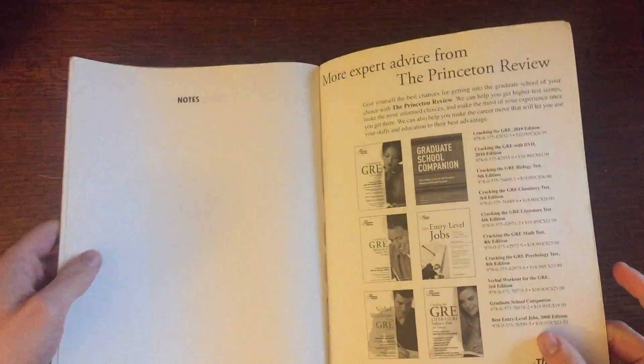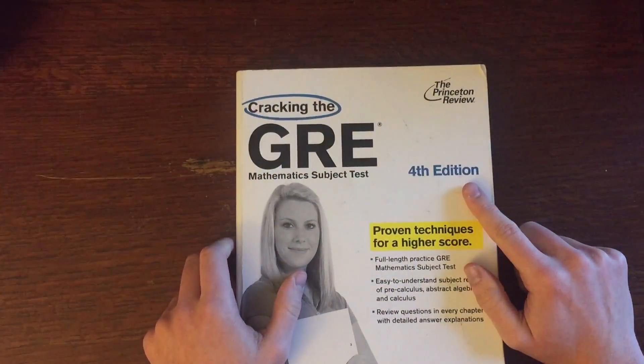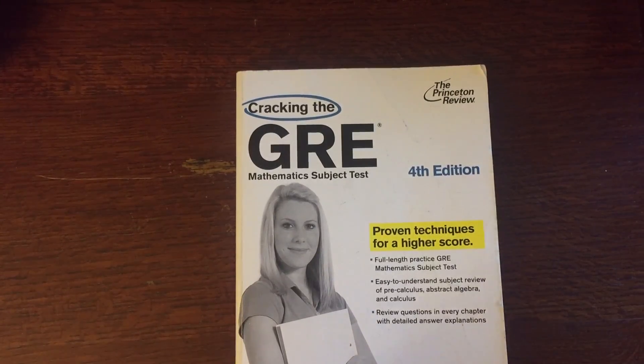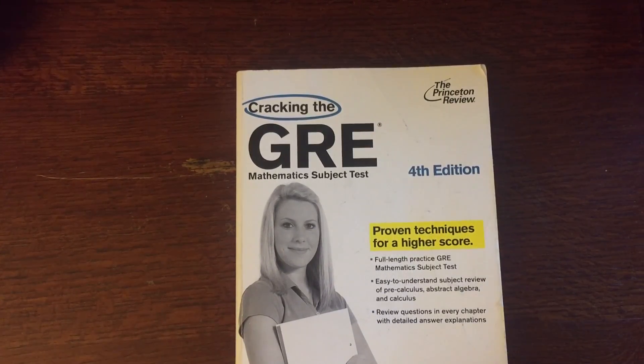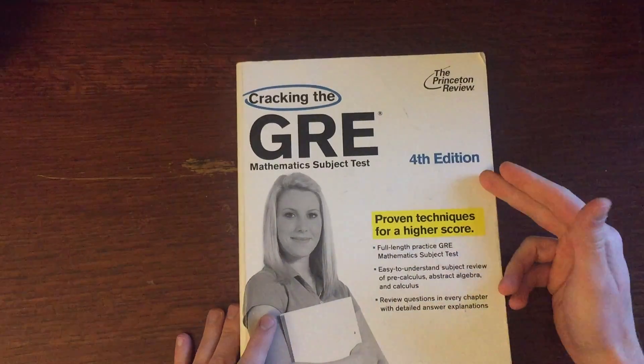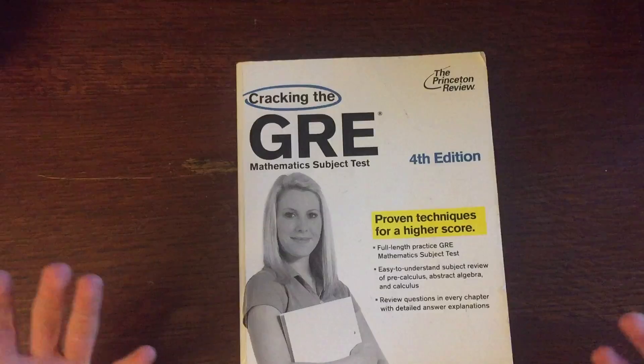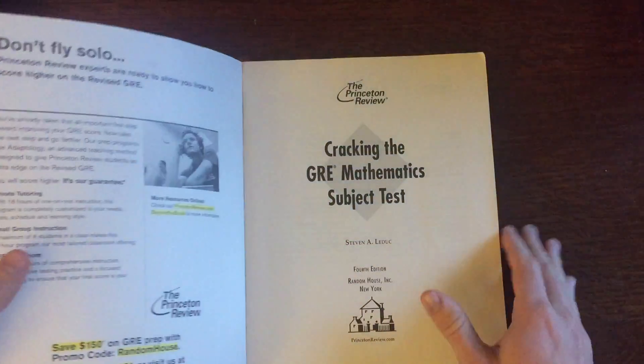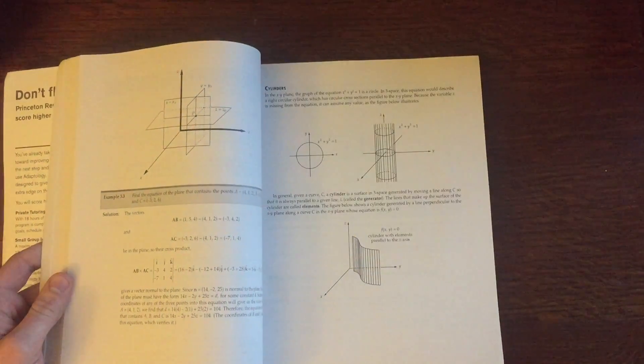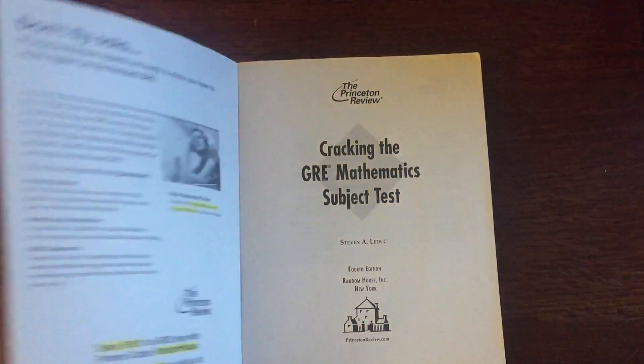The only bad thing I can really say about this book is that this is an older edition, and the rules of the math subject GRE test changed. I think they format the test a little differently. So if you buy the newer edition, that should hopefully be corrected and up to date now. And then I think I found like maybe one or two typos in it. But they weren't anything detrimental at all.